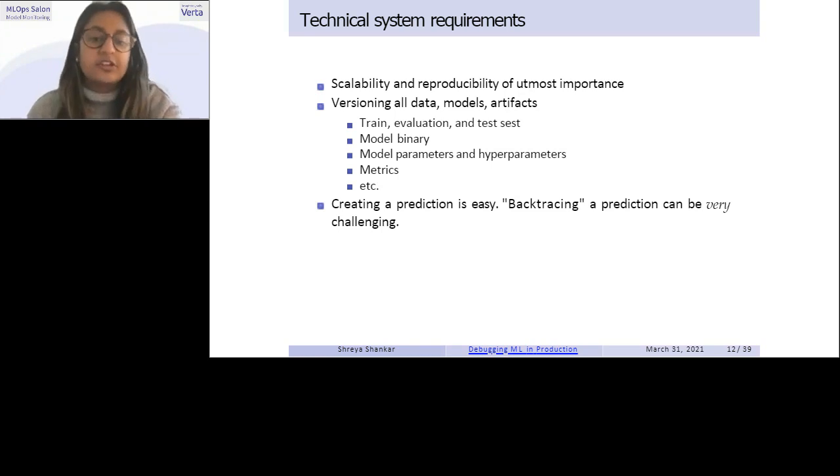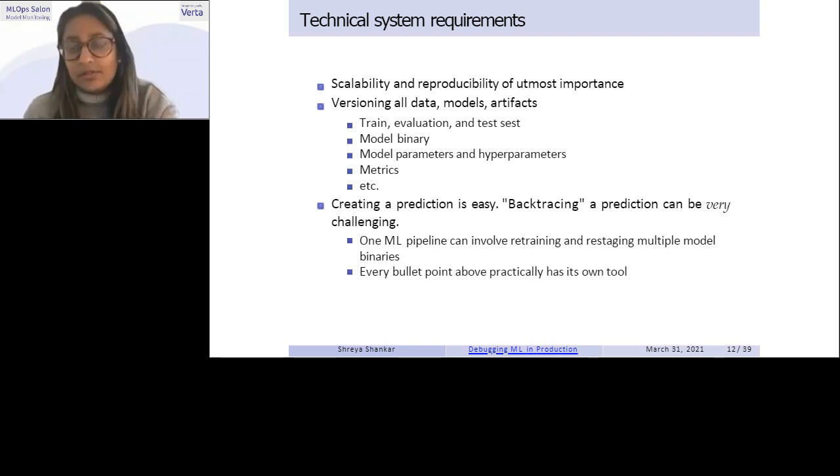So, open area for infra there, one ML pipeline, as I mentioned, can involve retraining and restaging multiple model binaries, and the tooling landscape of things, right, every bullet point here, even more, has basically their own tool to do whatever reproducibility or versioning. And like, I don't know, I think there's a lot of ML Ops tools out there, and it can be really hard to separate signal from noise, and also avoid a situation where your code base is just like a big pile of like a hundred different tools. So, how do you figure out how to solve all these problems, without reinventing the wheel, of course, but having like a manageable production code base. It's debugging hard.